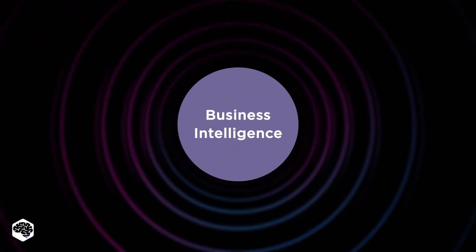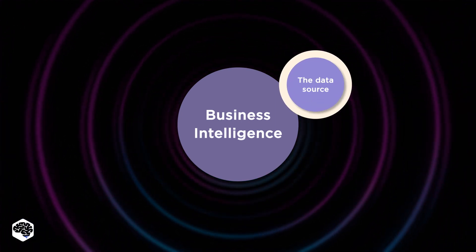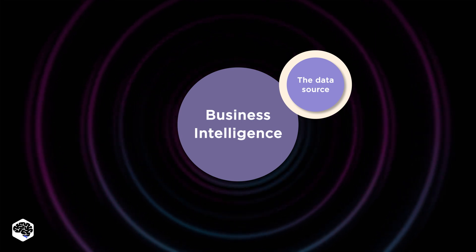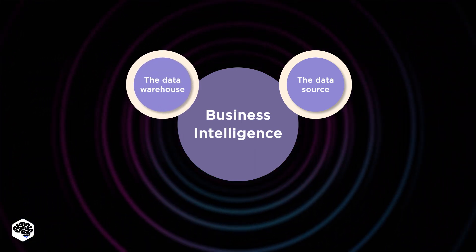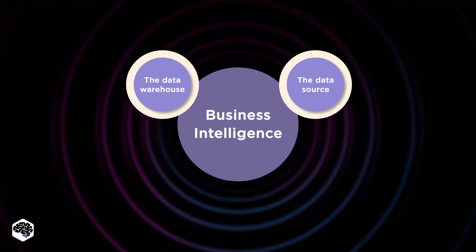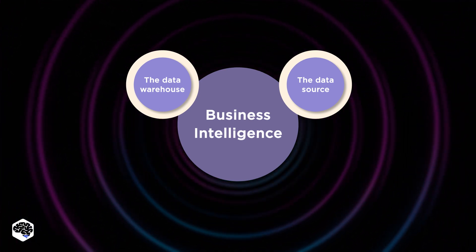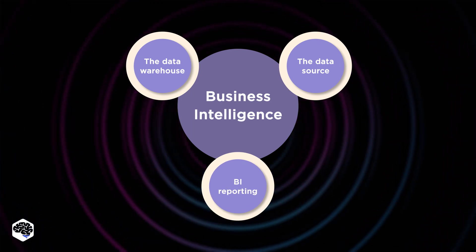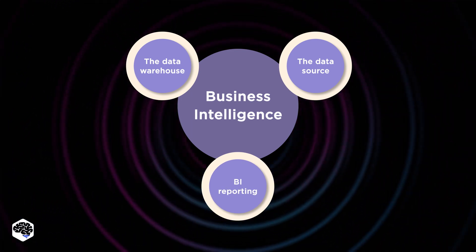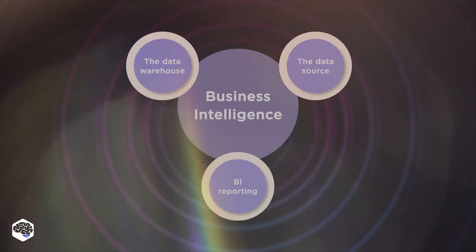Business intelligence encompasses three main components: a data source, which is a place where raw, unstructured data is stored; the data warehouse, a component aimed at the standardization and transformation of data to create a single database; and BI reporting, the ultimate component focused on data visualization via the business intelligence UI.